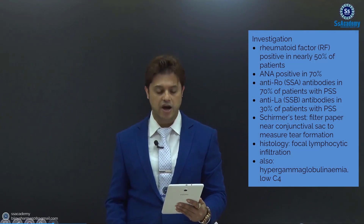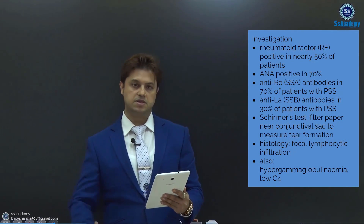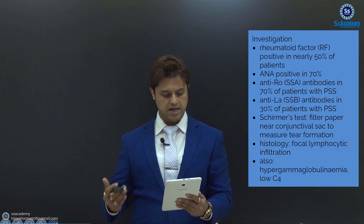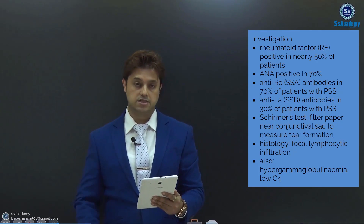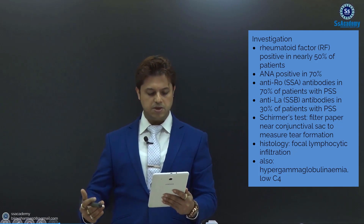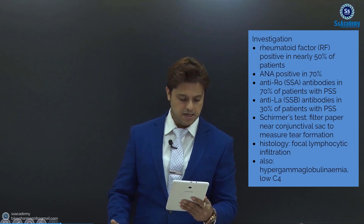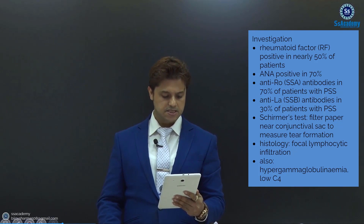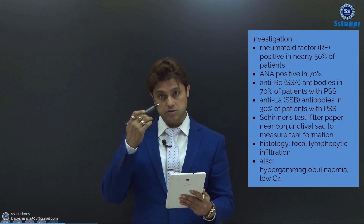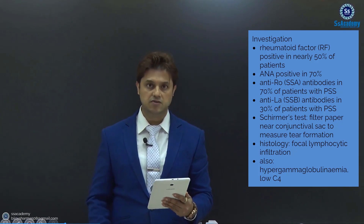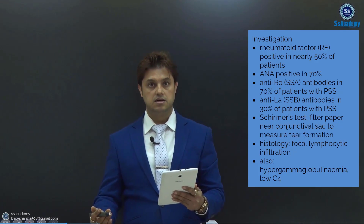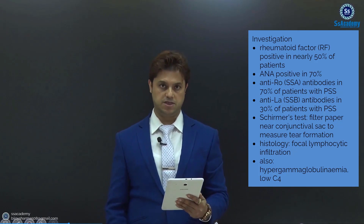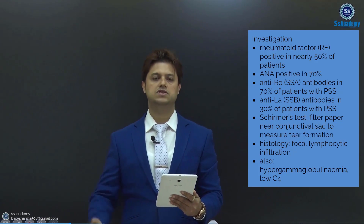Investigations: Rheumatoid factor is positive in nearly 50% of patients. ANA is positive in 70%. Anti-Ro/SSA antibodies in 70% of patients with primary Sjogren's syndrome (PSS), and anti-La/SSB antibodies in 30% of PSS. Schirmer's test uses a filter paper near the conjunctival sac to measure tear formation. Histology shows focal lymphocyte infiltration. Also hypergammaglobulinemia and low C4.